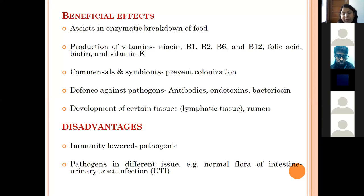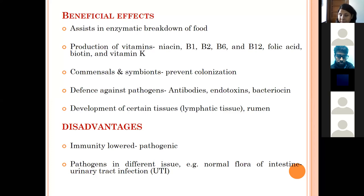Along with their benefits, normal flora also has disadvantages. They may become pathogenic if the host's immunity is lowered, or if the host gets injured or stressed — bacteria that normally remain as commensals can convert into pathogens and cause disease. Some non-pathogenic bacteria in their natural habitat can become pathogenic if they migrate to another tissue — for example, E. coli, a normal inhabitant of the intestinal tract, can cause urinary tract infection if it migrates to the urinary tract.